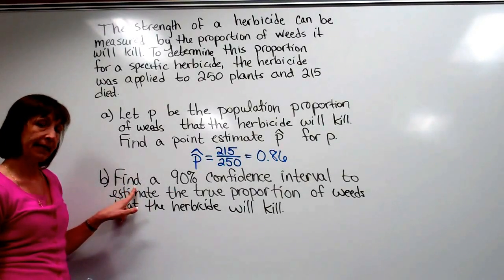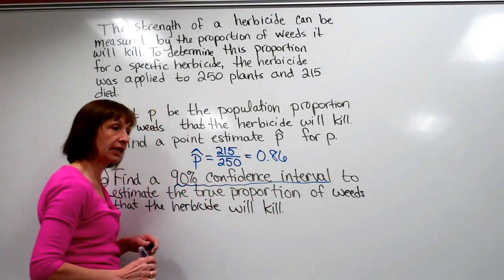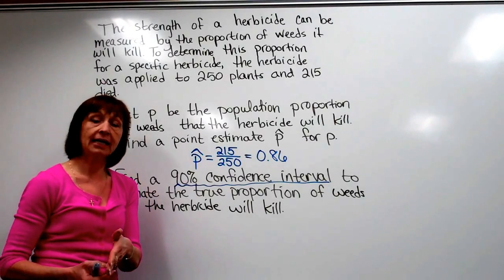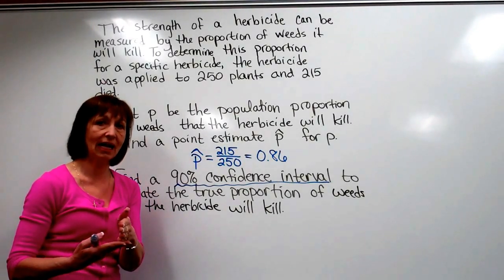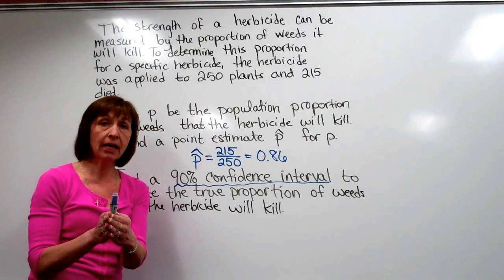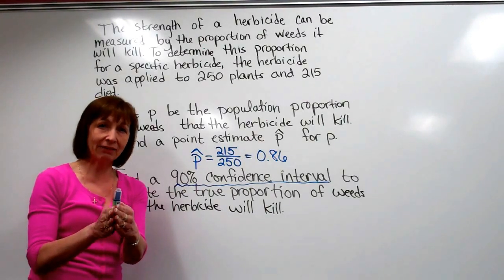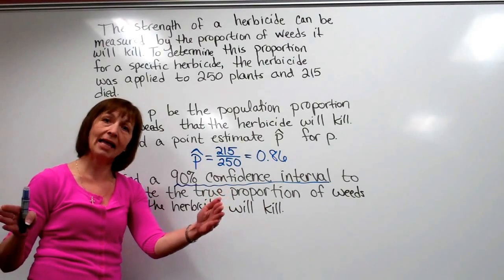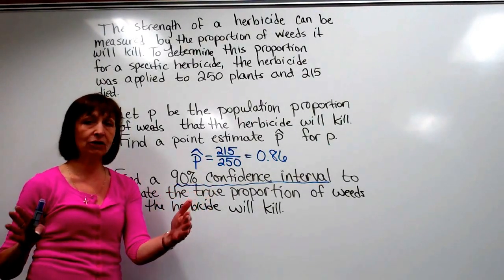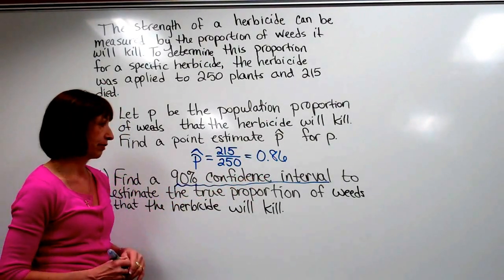Part B says to find a 90% confidence interval to estimate the true proportion of weeds the herbicide will kill. Our point estimate is either right or wrong — it's just out of the sample and usually not exactly the true population proportion. Using the point estimate with the correct formulas and critical values, we can give a span of values where we are 90% sure the true population parameter falls.